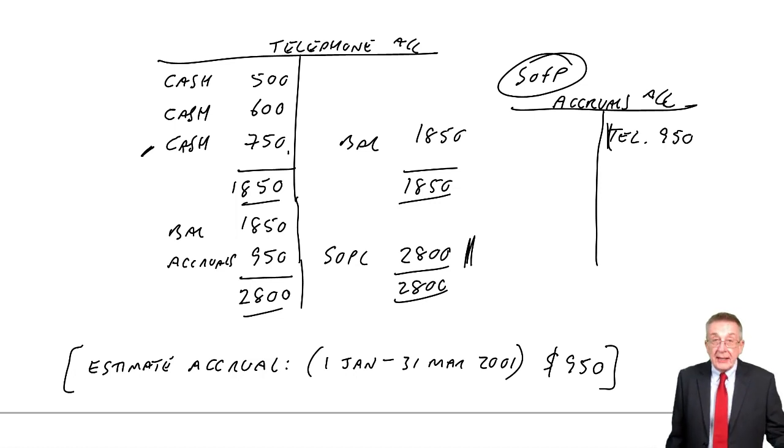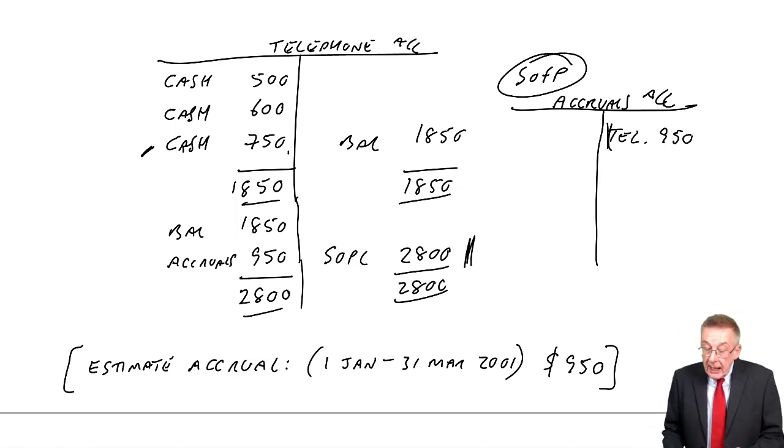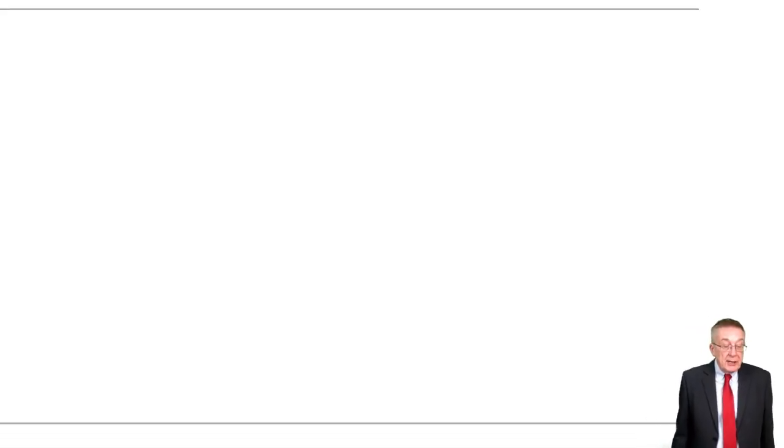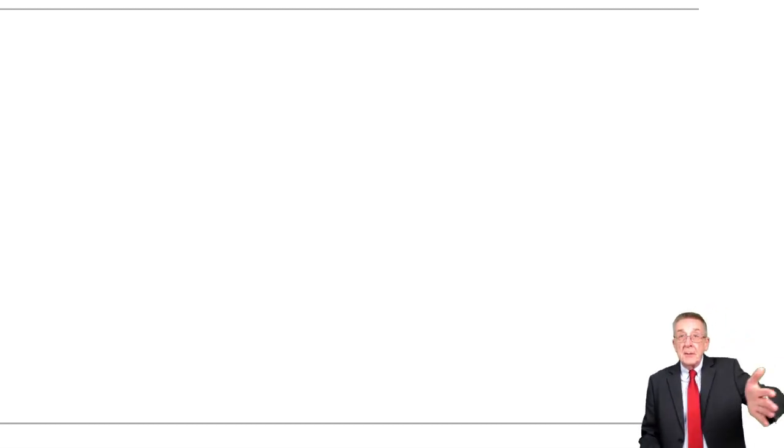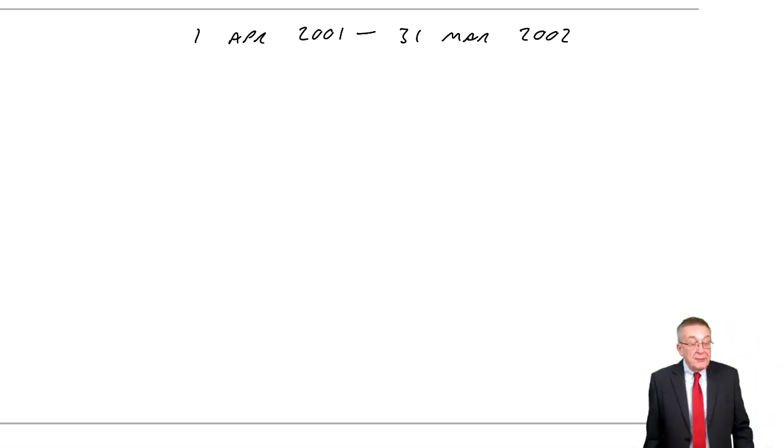Remember, it is effectively continuing from example two, so I have that in front of you. I won't rewrite what we did earlier. But let's look at example four. During the year to 31st of March 2002, remember last time we got up to March 2001, this time we're going from the 1st of April 2001 to the 31st of March 2002.